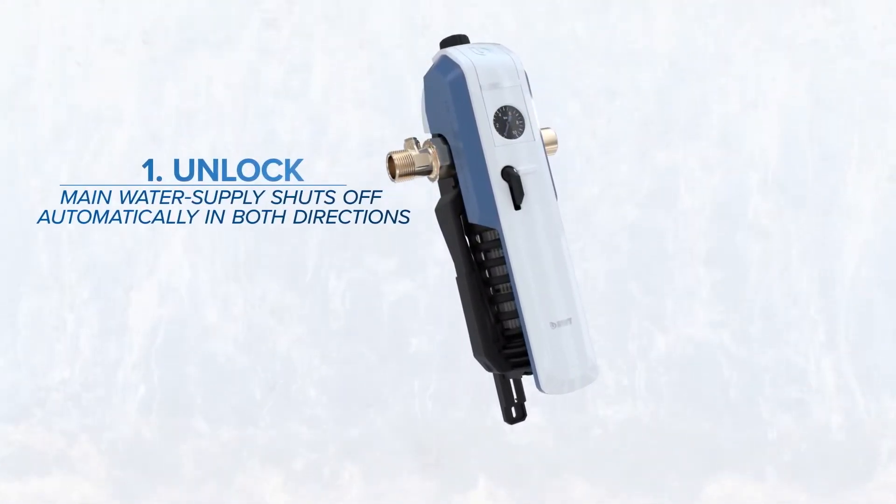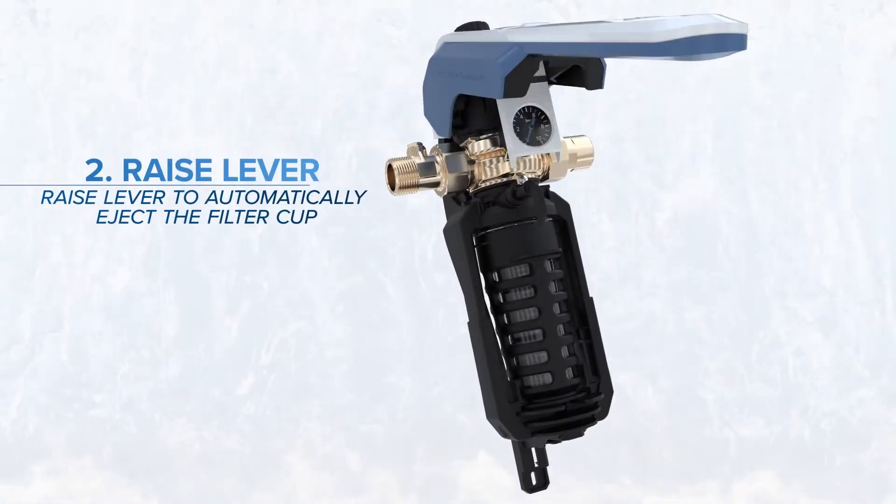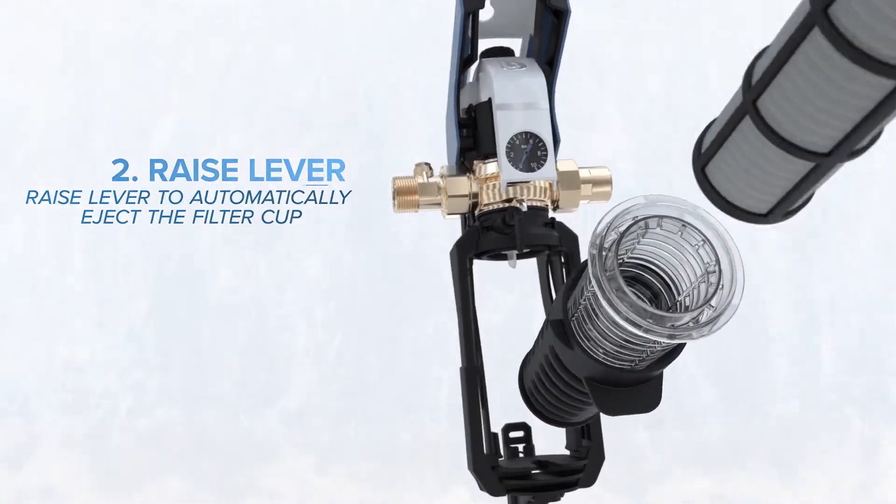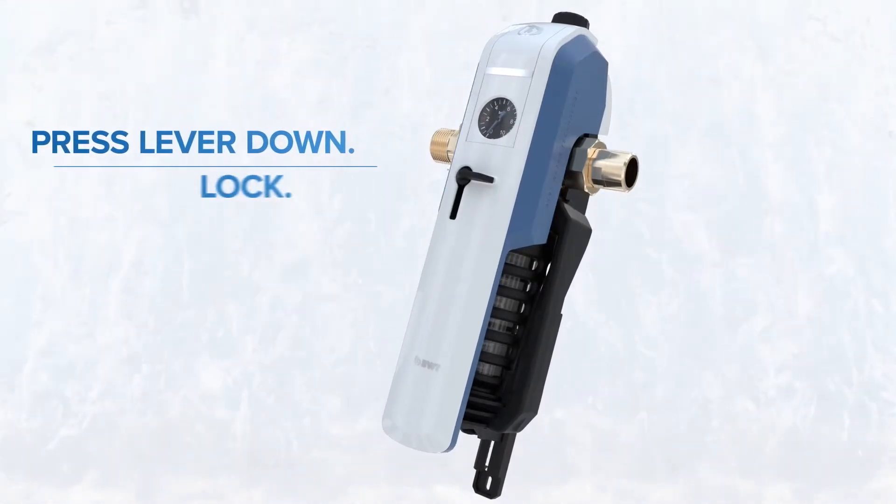First, unlock. The main water supply shuts off automatically in both directions. Second, raise lever to automatically eject the filter cup. Third, change the old with the new filter. Press lever down. Lock. Done.